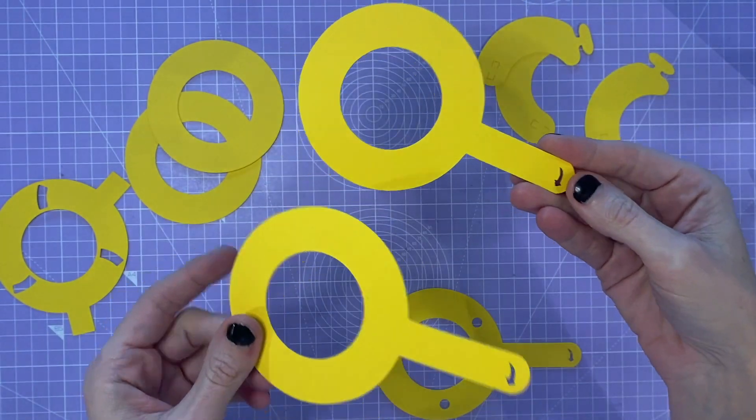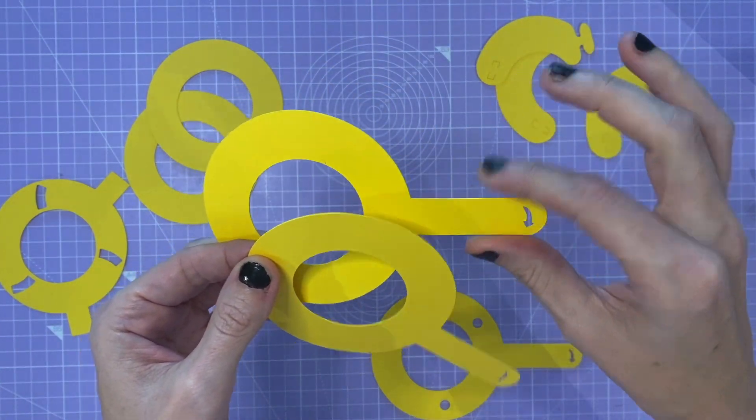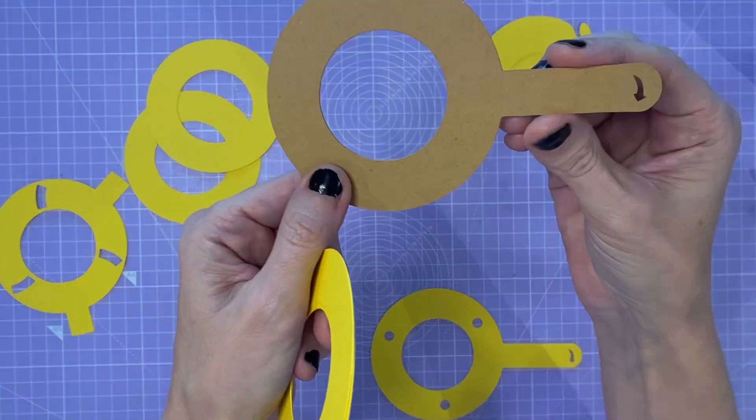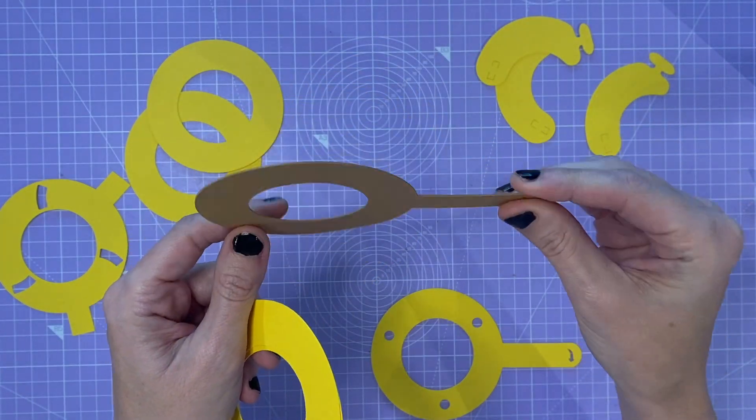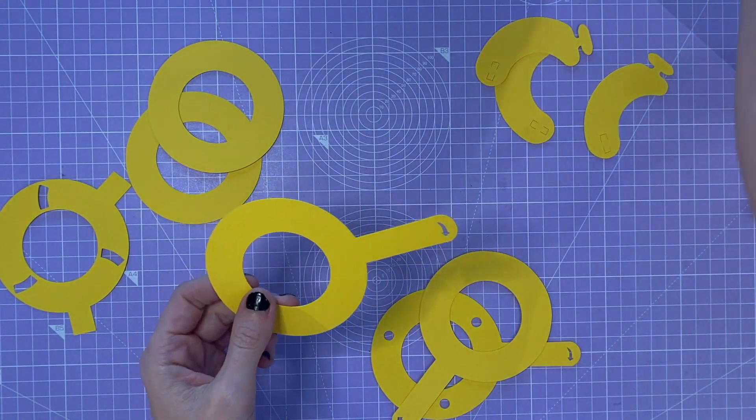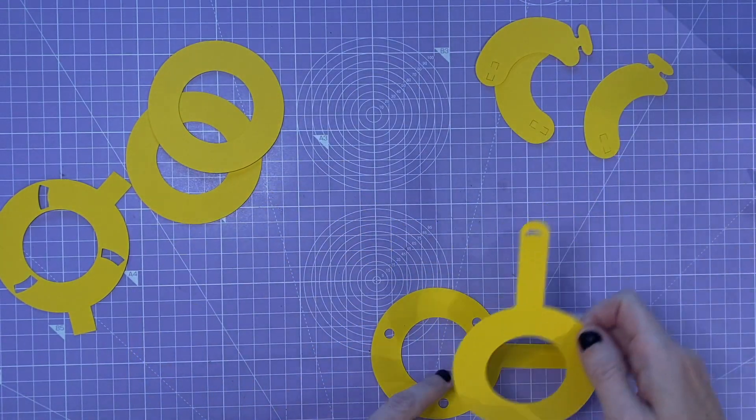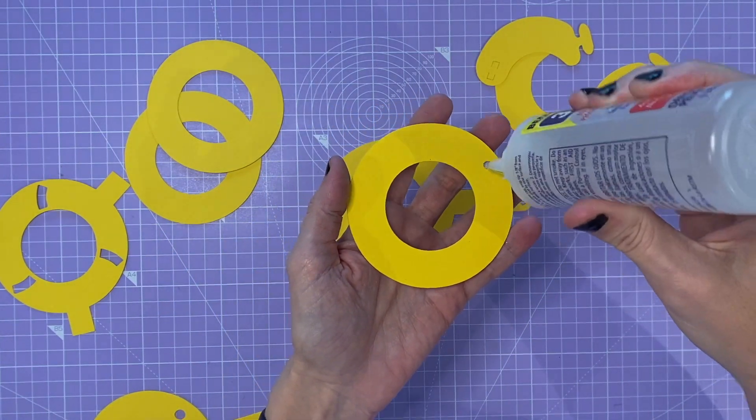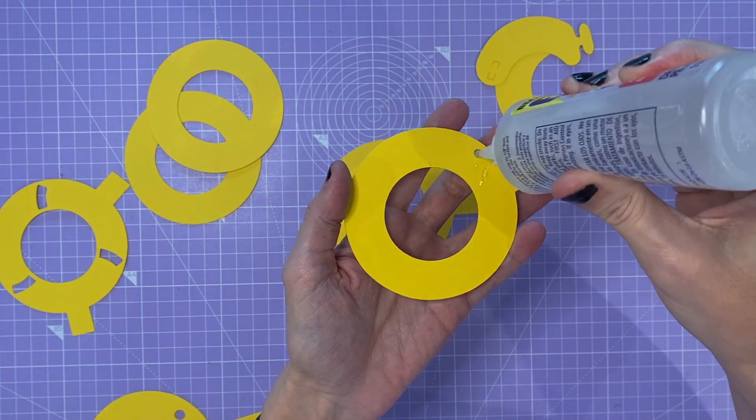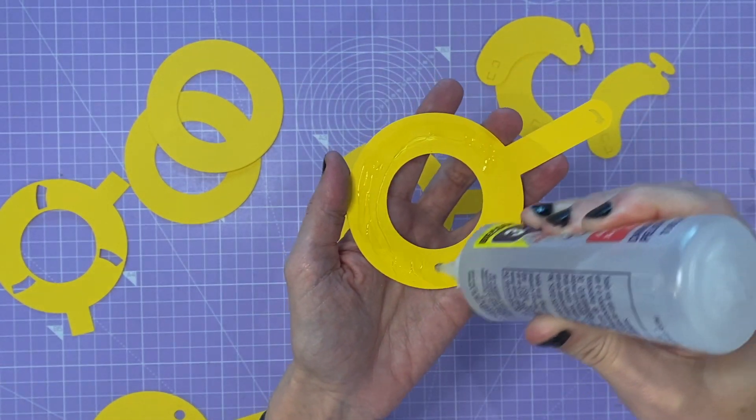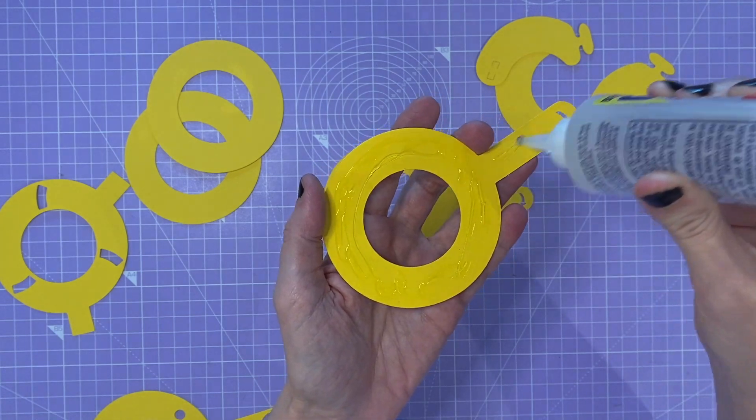And then we're going to take these two with no holes and do exactly the same. Now this is craft board. If you were using craft board you might not need to use two of those. Craft board is fantastically strong, but I have lots of different colors of card and they're varying weights.